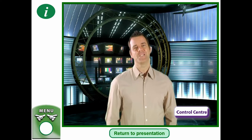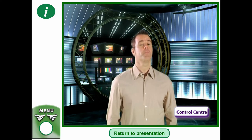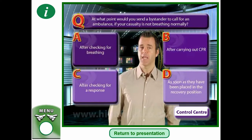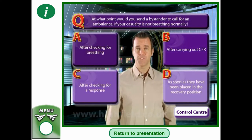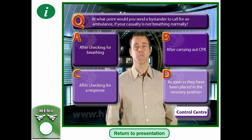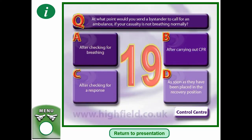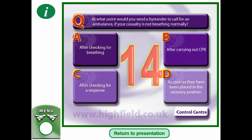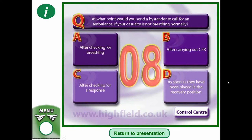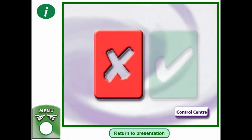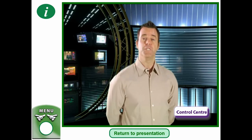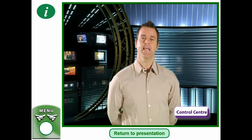At what point would you send a bystander to call for an ambulance if your casualty is not breathing normally? Is it A — after checking for breathing; B — after carrying out CPR; or C — after checking the casualty's breathing, send a bystander for healthcare? Pause the video and click which one you think it is. The answer is A — after checking the casualty's breathing, send a bystander for help.